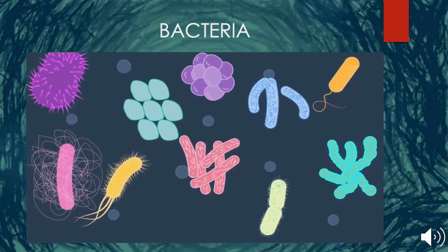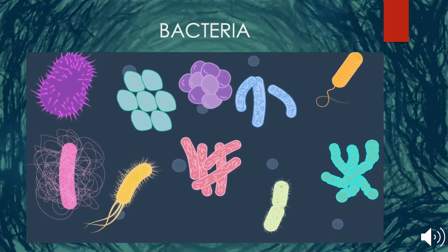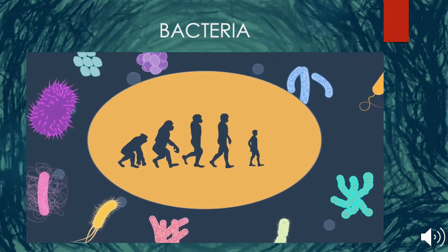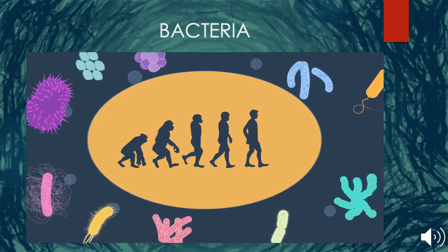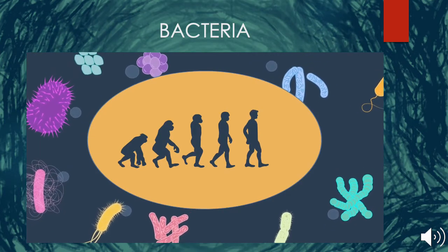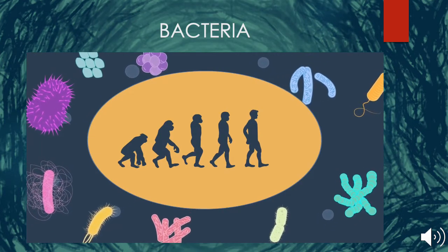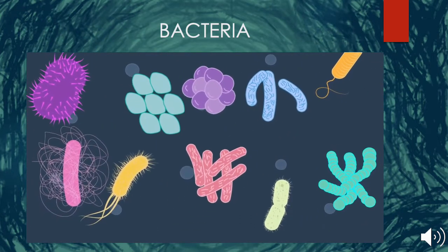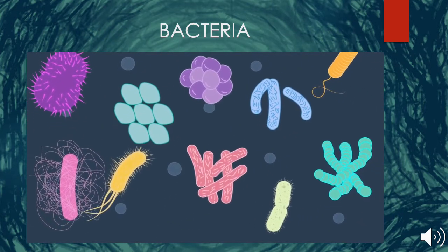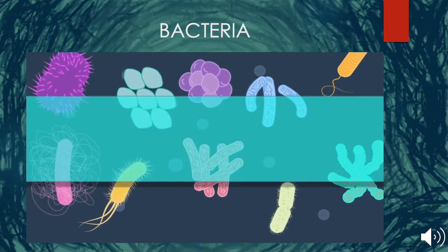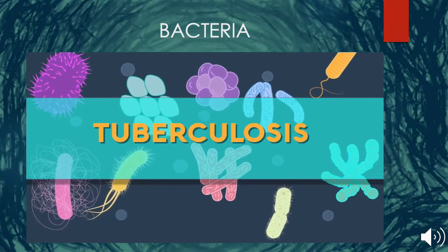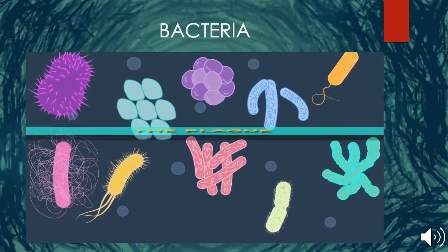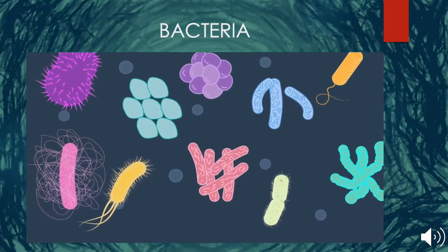Bacteria are one of the oldest living organisms on earth — they are around 3.5 billion years old. Considering the evolution of life, they are believed to be distantly related to humans. They are responsible for a number of diseases including cholera, tuberculosis, and plague, amongst others.